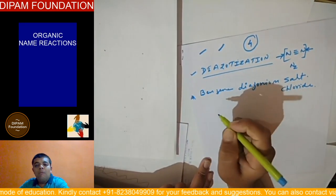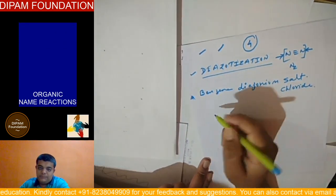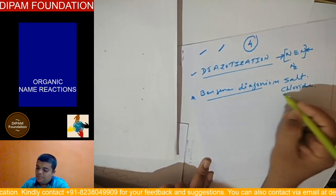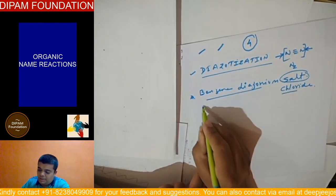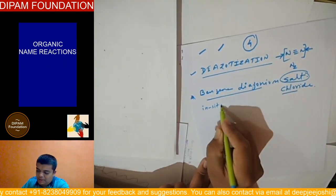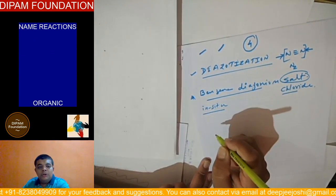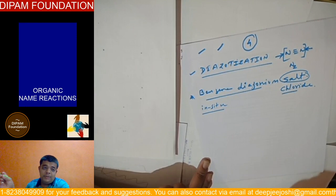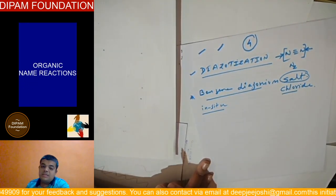The first thing is how would we prepare benzene diazonium chloride salt. Benzene diazonium chloride salt, it is a reaction where you will find an in-situ process. This is an in-situ reaction.